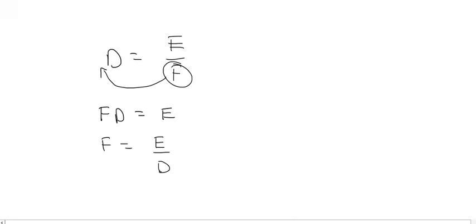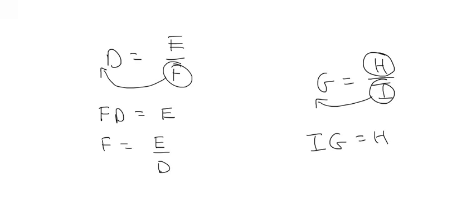And then our last one would be if we have g equals to h over i. And if you want to get h by itself, well then you just need to move the i to the left. So it just ends up going next to the g. So anything that's at the bottom, if you take it to the other side, it ends up at the top. And anything that was at the top and you take it to the other side, it ends up at the bottom.